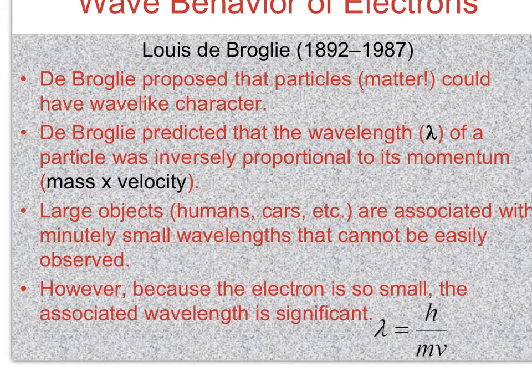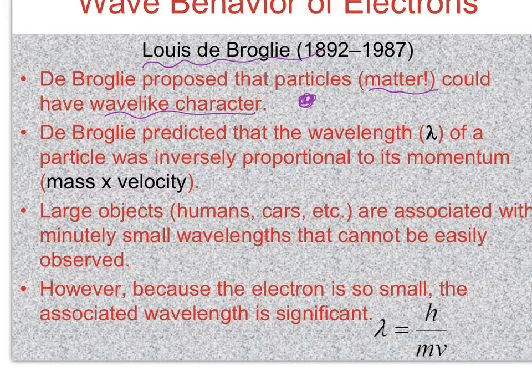As I mentioned, Bohr's model was probably the first step toward the current quantum mechanical model of the atom. Another major contributor is a scientist named Louis de Broglie. In summary, de Broglie theorized that all types of matter could have wave-like character. Classically we think of matter as simply a particle, not a wave. De Broglie proposed that there is wave-like behavior associated with all types of matter.